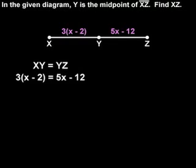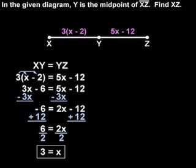Solving this equation for x, remember that we must first distribute the 3 through the parentheses on the left side to get 3x minus 6 equals 5x minus 12. And solving from here, we find that 3 equals x.